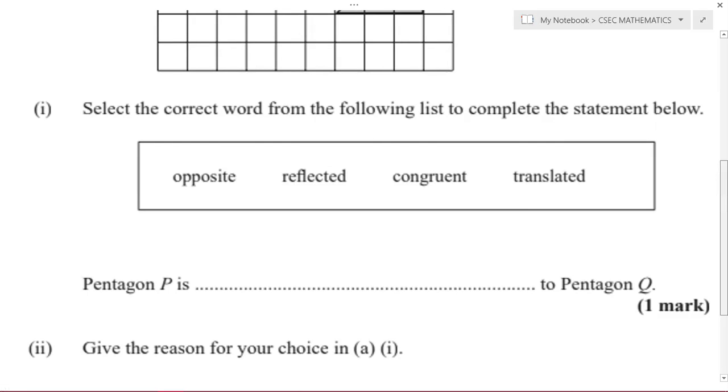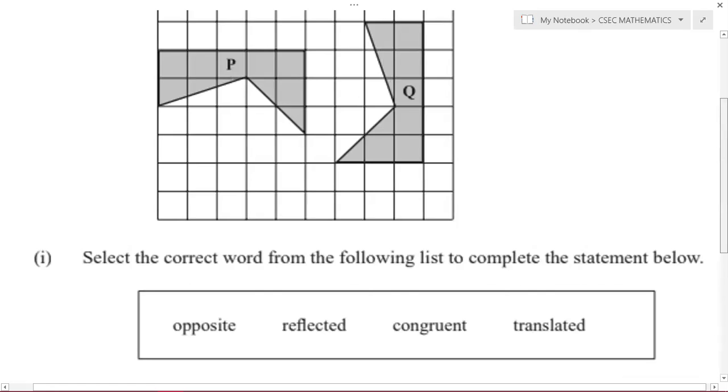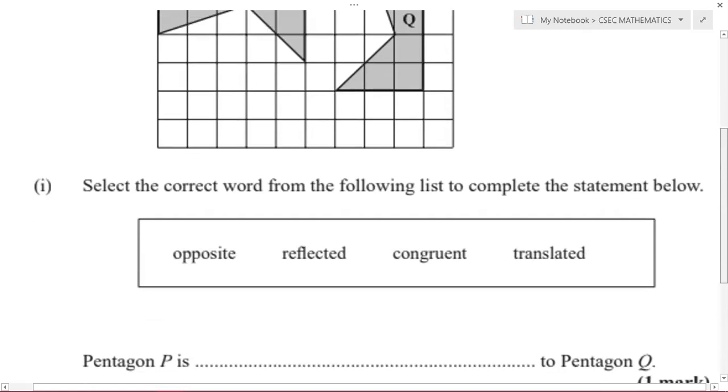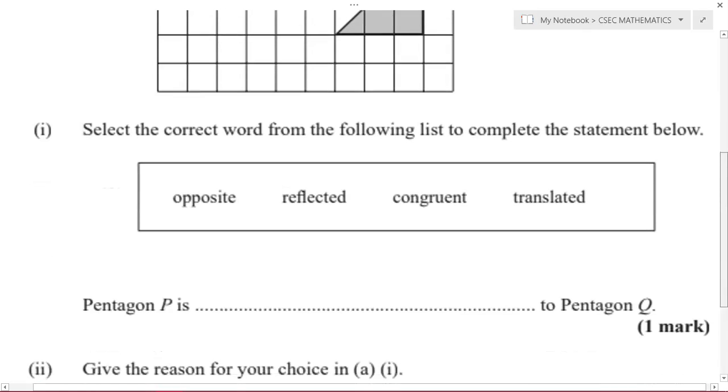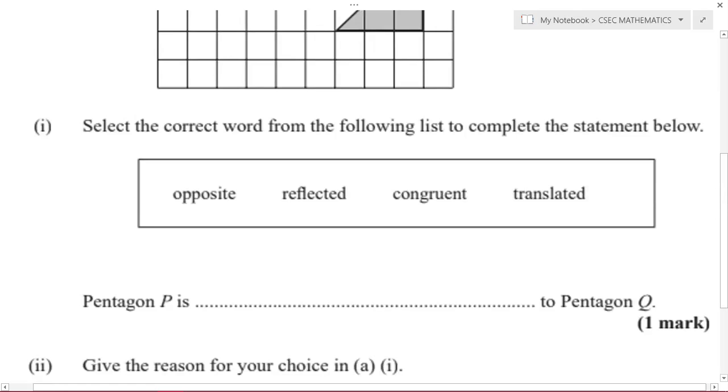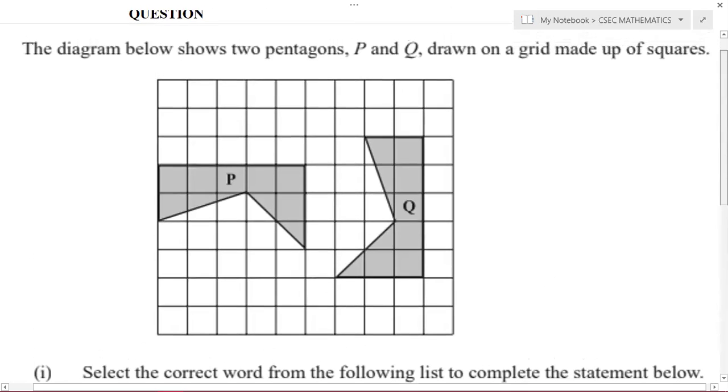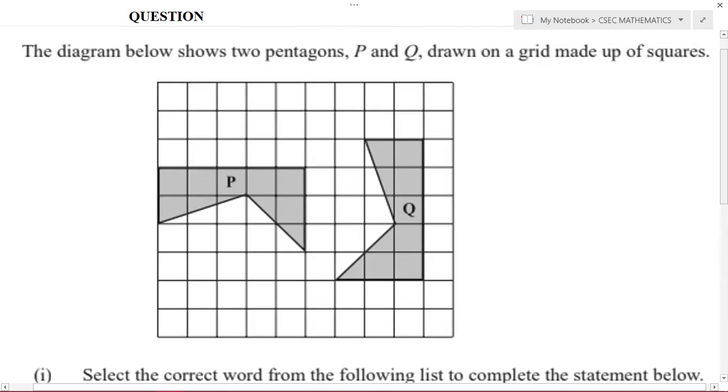Let's do the first part. It says to select the correct word from the following list to complete the statement below. So they're saying that Pentagon P is what to Pentagon Q. Is Pentagon P opposite to Pentagon Q? Is it reflected to Pentagon Q? Is it congruent to Pentagon Q? Or is it translated to Pentagon Q? What do you think? Observe the diagram carefully and what can you tell.